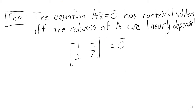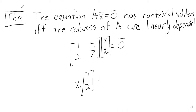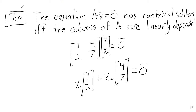This theorem is really just the definition of a matrix times a vector together with the definition of linear dependence. The statement that a matrix times a vector equals zero is the same as x1 times the first column vector plus x2 times the second column vector equals zero — that's the definition of matrix-vector multiplication. So the first equation has non-trivial solutions if and only if the second does, if and only if those vectors are dependent.